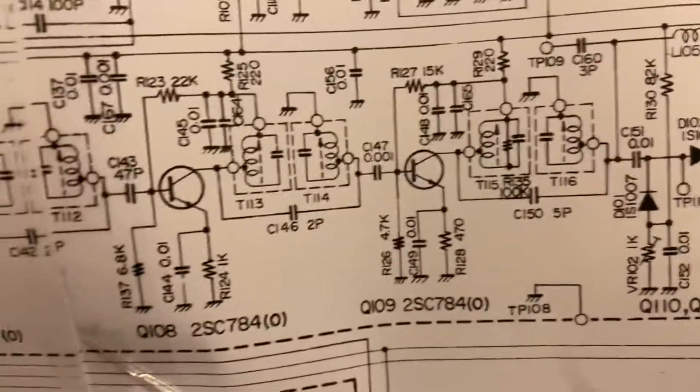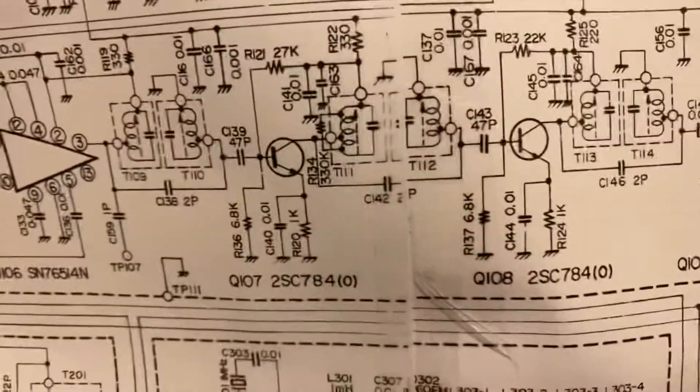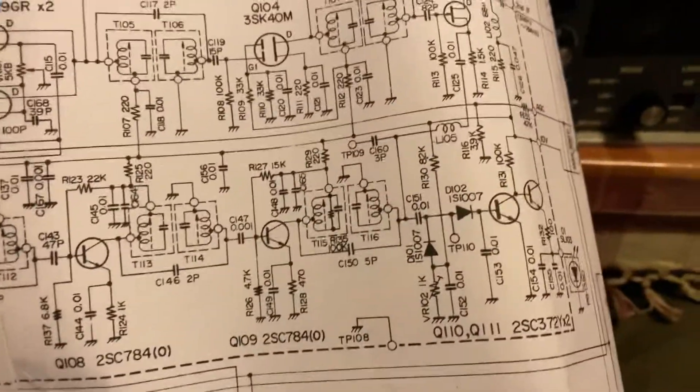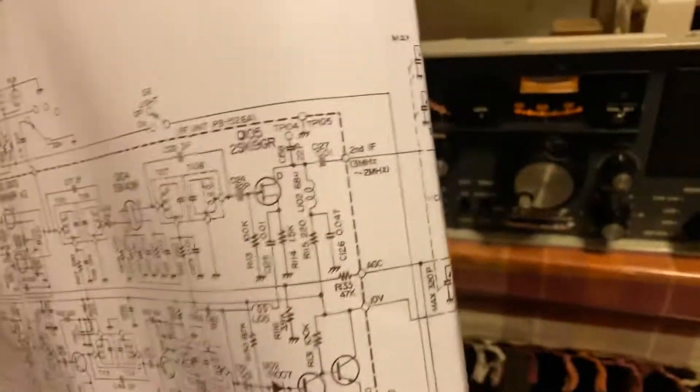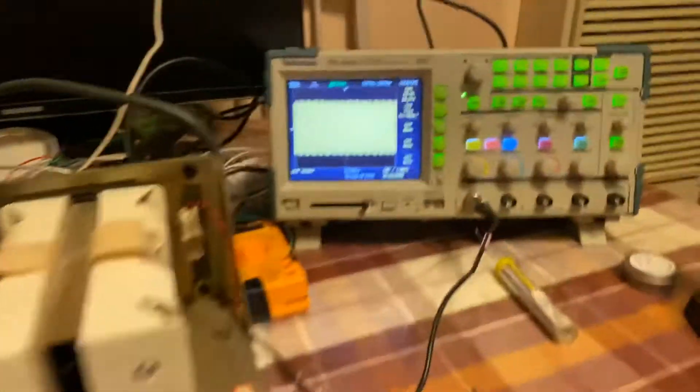You should see a good signal all the way from the IC pin 3 coming out to Q107 to Q108. And Q109 should be used to signal and you should get a very strong output there at the second IF. And it should look like that.